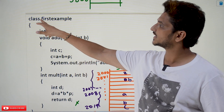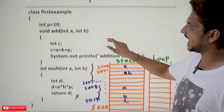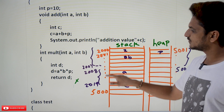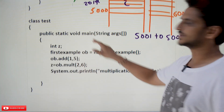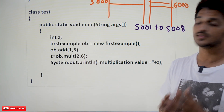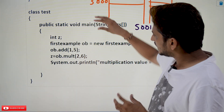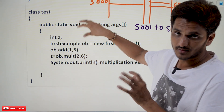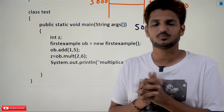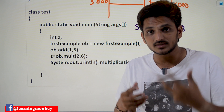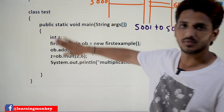In our last class example we have a class called FirstExample. We had an instance variable p and we have two methods in this class — add method and multiplication method — and one more class, ClassTest. In ClassTest we have a main method. Our execution starts from this main method. Whenever execution starts from the main method, in order to execute it we need some space to store the values of the variables present in this main method.